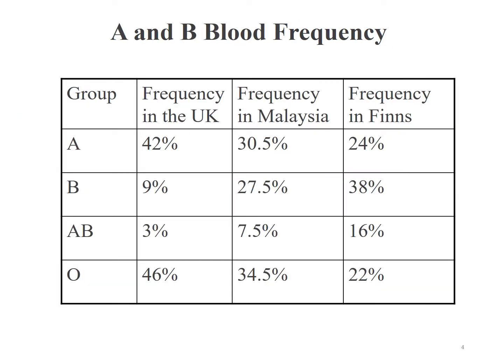Here is a quick comparison. In Malaysia, the most commonly found blood group is blood group O at 34.5%, and the same goes for the UK but at 46%. But in Finland, the most common blood group is blood group B at 38%, while AB is the rarest group for all these countries.